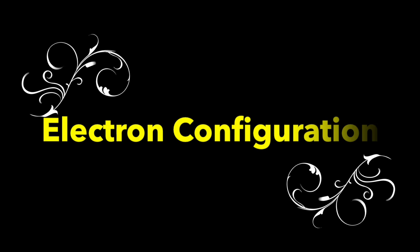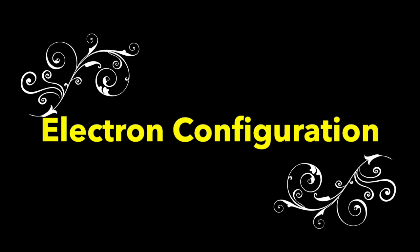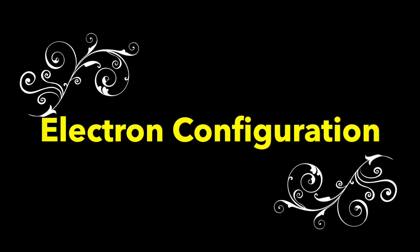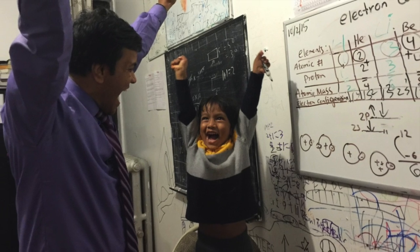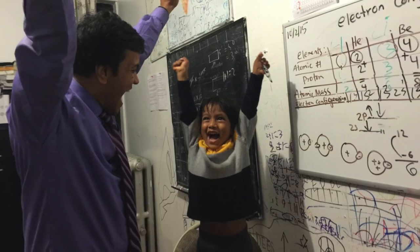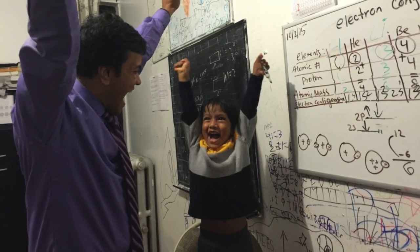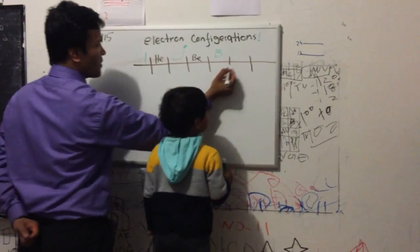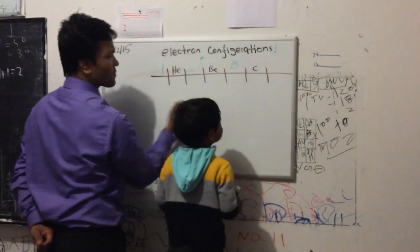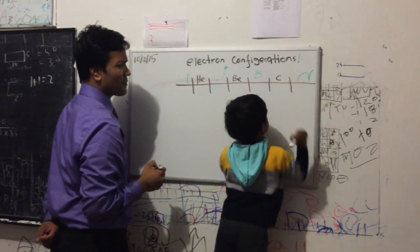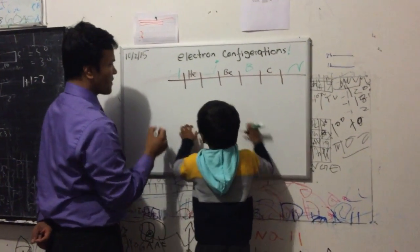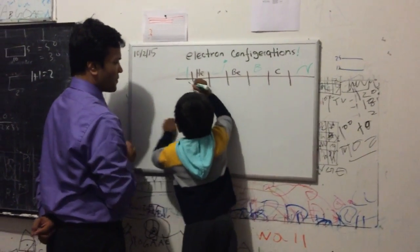Boron, carbon, everywhere nitrogen, all through the air with oxygen so you can breathe in fluorine for your pretty teeth, neon to light up the signs, sodium for salty times, magnesium, aluminium, silicon, carbon, nitrogen.